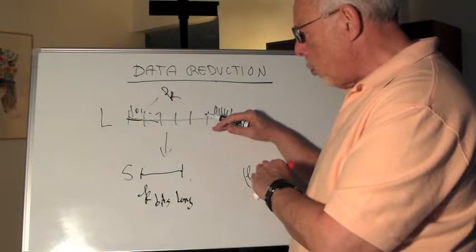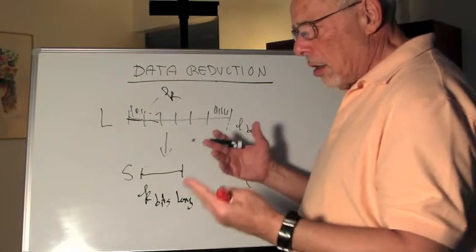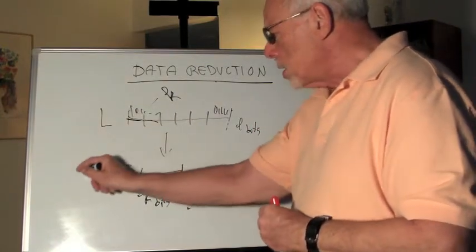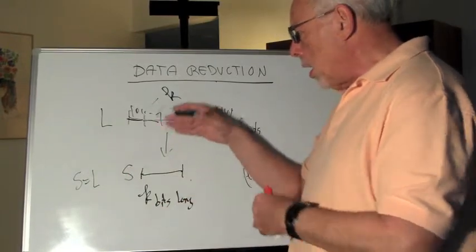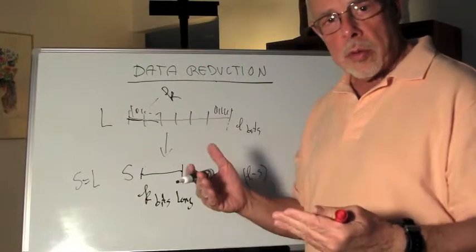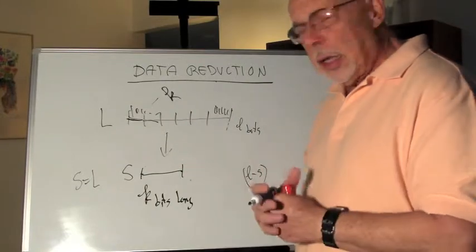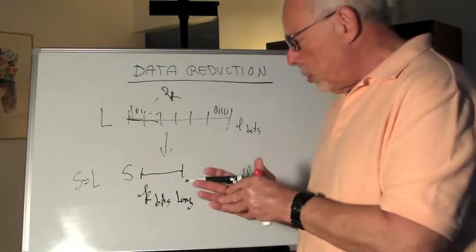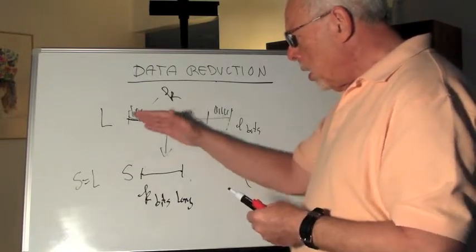And of course in the extreme way, if the short equals the long, s equals L, then any flip, if it didn't occur simultaneously with the other one, will show up.